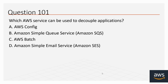Question number 101: Which AWS service can be used to decouple applications? Options: A. AWS Config, B. Amazon Simple Queue Service, C. AWS Batch, D. Amazon Simple Email Service. The correct option is B, Amazon Simple Queue Service.